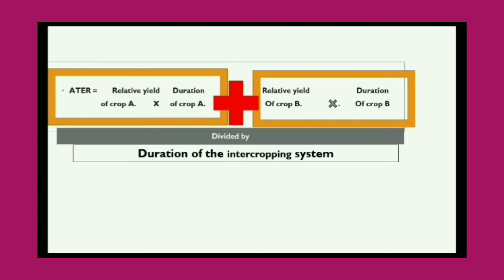We have to divide by the total duration of the complete intercropping system. For example, if you are taking maize plus finger millet, or maize plus groundnut, we have to take the total duration that both crops have taken in the intercropping system — whether it's 90 days, 150 days, or 180 days. That complete duration or total number of days of the intercropping system should be taken into consideration.